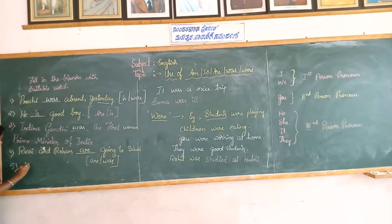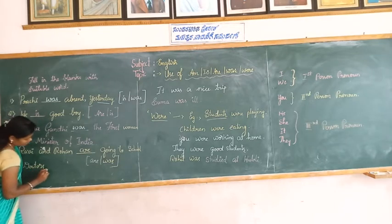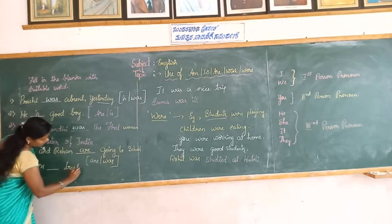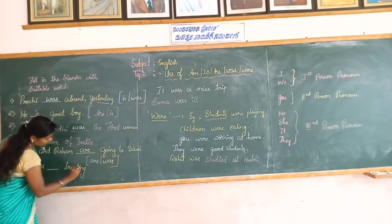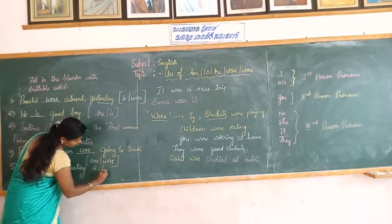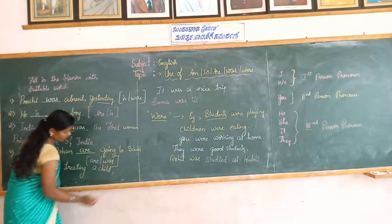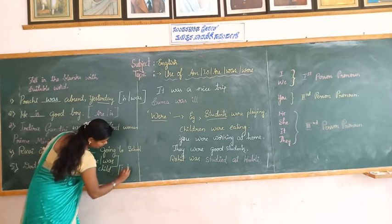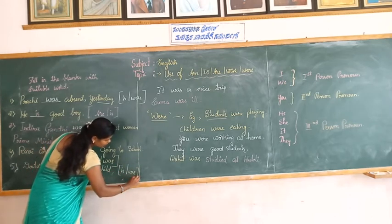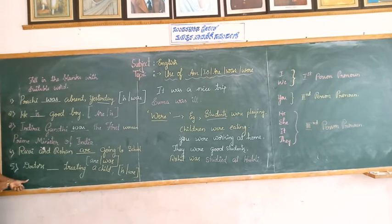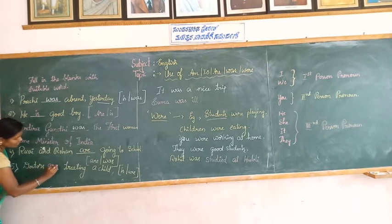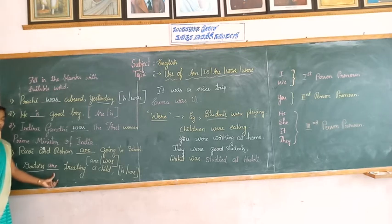Doctors ___ treating a child. 'Doctors' is the plural form. So we use 'are'. Doctors are treating a child.